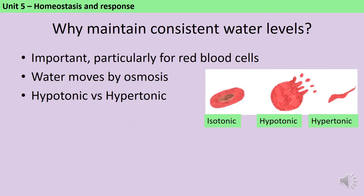If the tissue fluid or blood surrounding cells contains too much water compared to the solutes dissolved in it, the excess water will move into those cells by osmosis, which may cause them to burst in a process called hemolysis. If the tissue fluid or blood contains too little water we say it's hypertonic and the cells will shrivel up or undergo crenation.